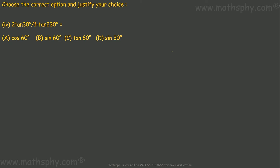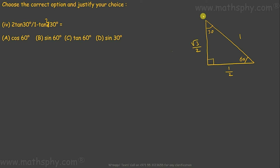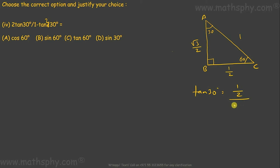This one here — this is tan squared 30 degrees. Tan 30 means this is a 30-degree angle: this side is 1, this is 1 over 2, this is root 3 over 2. Let's name this as a, b and c. So tan 30 degree would be — looking from this side — opposite over adjacent. Tan 30 degree is 1 over 2, over root 3 over 2. It gives you 1 over 2 into 2 over root 3; the 2s cancel, giving you 1 over root 3.